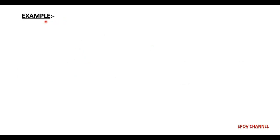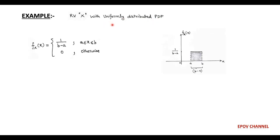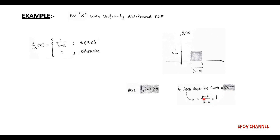Let us take an example of PDF where the random variable X is uniformly distributed, meaning it fully satisfies all properties of PDF: it must be non-negative, and the area under the curve must be unity. This is called a uniformly distributed PDF as shown in the figure. Here real values a and b are positive, and mathematically small f(x) equals 1/(b − a) for a ≤ x ≤ b, and 0 otherwise.